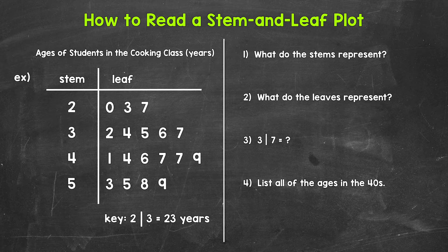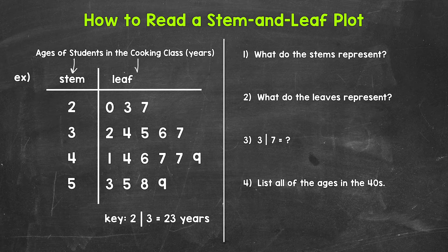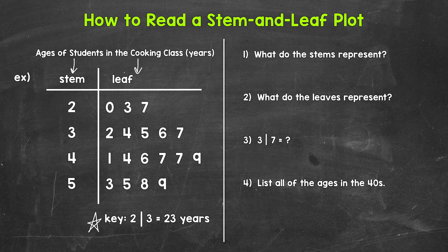When working with stem and leaf plots, every value is split into a stem and a leaf. So these ages are going to be split. Here are all of the stems, and here are all of the leaves. The stems are on the left and the leaves are on the right. Let's look at this key right here, and this will tell us what everything represents.